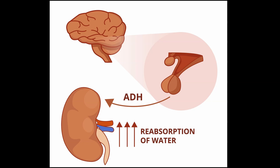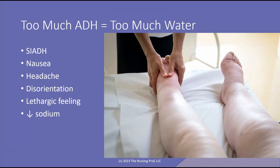Changes in our blood volume are also going to affect blood pressure. Too much ADH — too much anti-diuretic hormone — means this person is not diuresing. That means we have too much water on board. This is also known as the Syndrome of Inappropriate ADH, or SIADH.